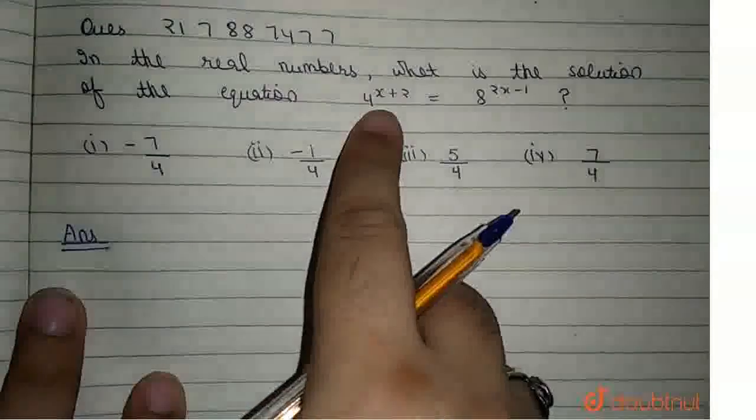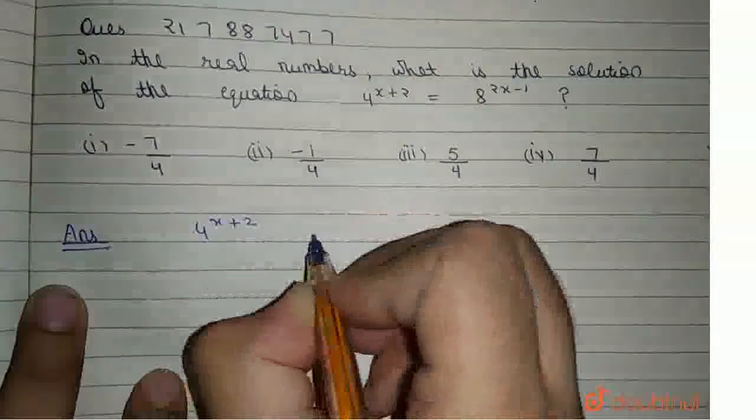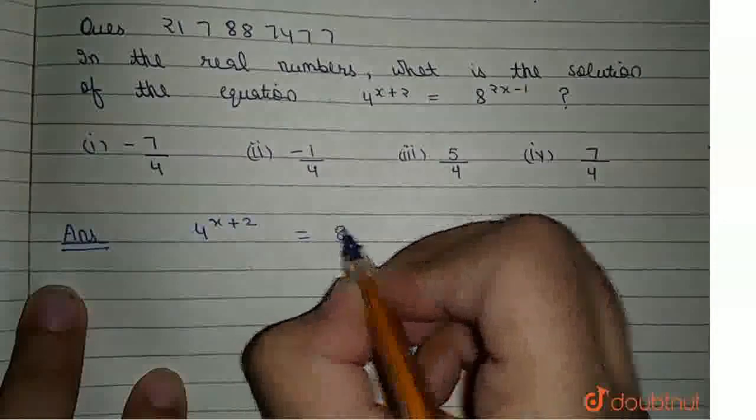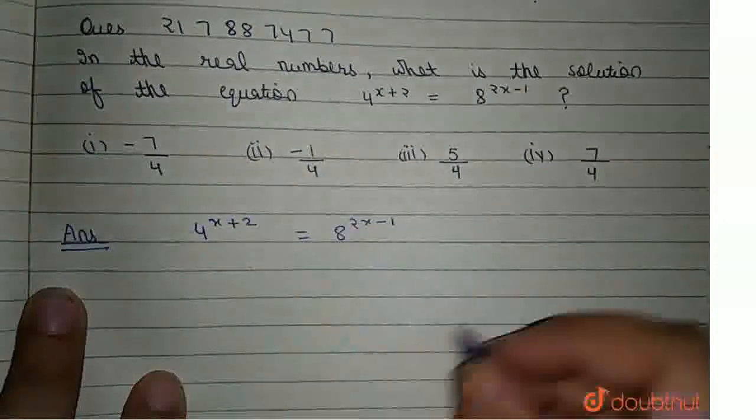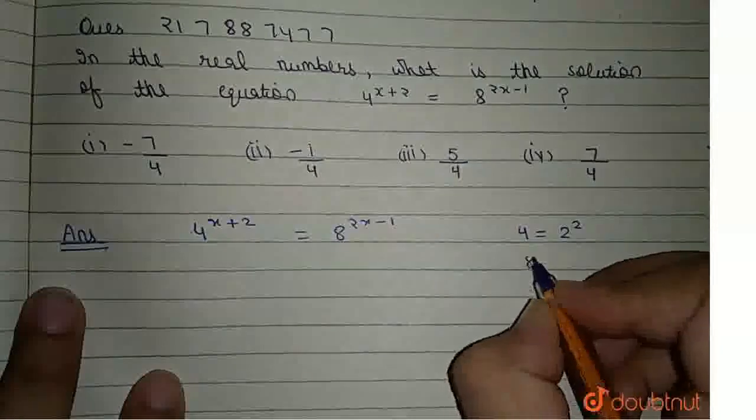Let us proceed with our answer. We have the equation 4^(x+2) = 8^(2x-1). Now, what we need to do is write 4 as 2² and 8 as 2³.